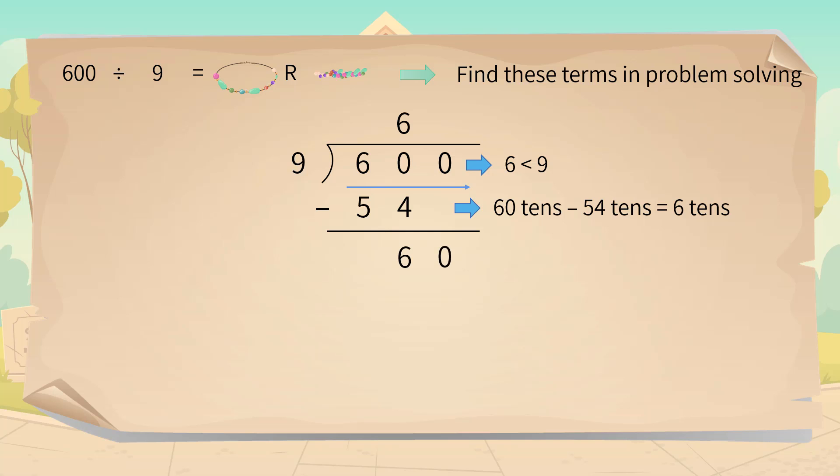Then we multiply the quotient and divisor again and subtract the product from the dividend. Finally, we find the quotient is 66 with the remainder 6.